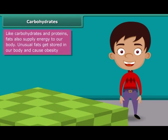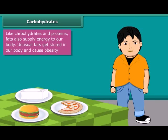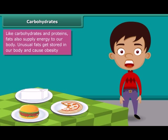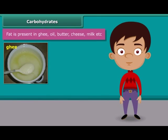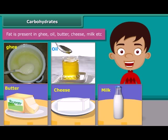I know that you all love pizza, burger, cheese, etc. But your parents do not allow you to eat them regularly because such foods contain large amounts of fat. Fat supplies us with energy. If we don't use up this energy, our bodies build up a store for future use in the form of body fat. This is the reason why people eating much oily food become obese. Ghee, oil, butter, cheese and milk are some main sources of fats.